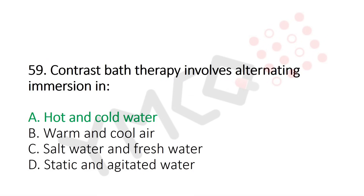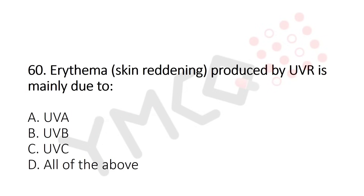Now let's move to question number 60. Erythema — skin reddening produced by UVR — is mainly due to: Option A, UVA. Option B, UVB. Option C, UVC. Option D, all of the above. And the answer is Option B, UVB.